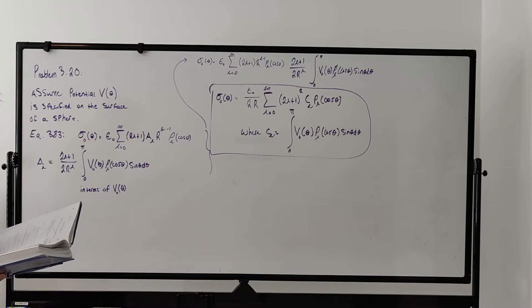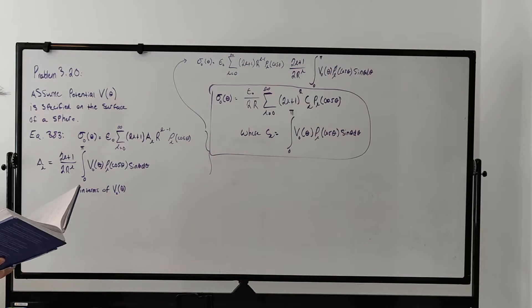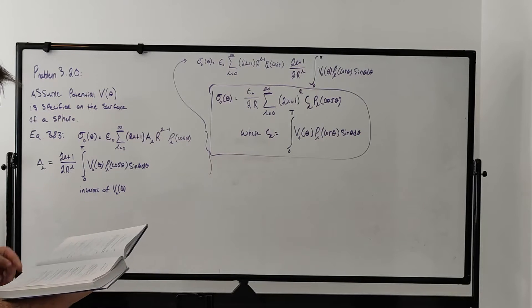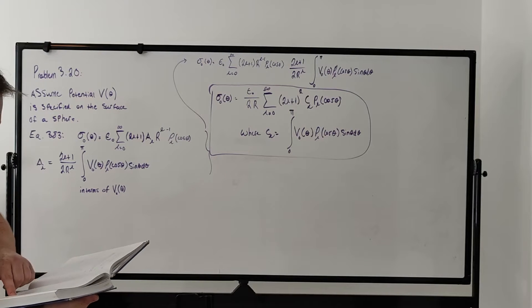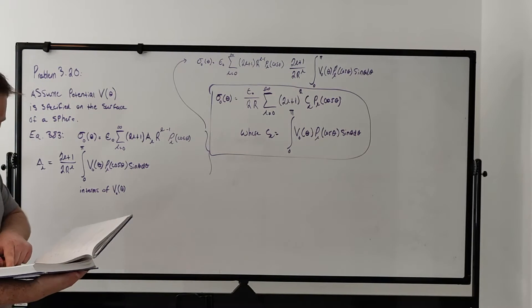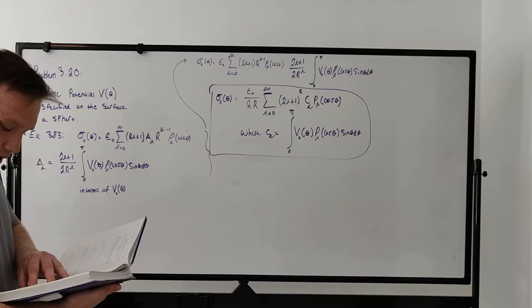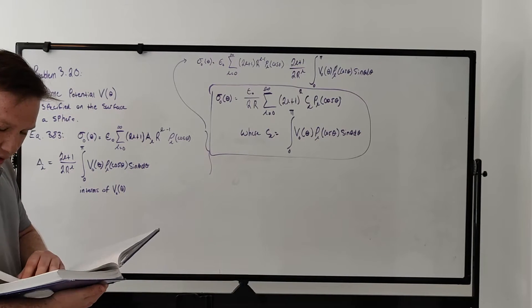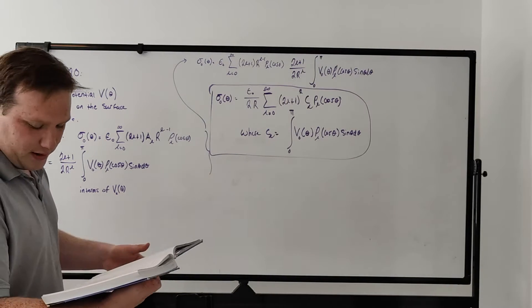The problem statement is: suppose the potential V₀(θ) at the surface of a sphere is specified and there is no charge inside or outside the sphere. Show that the charge density on the sphere is given by the equation in the book, which is my final answer: ε₀/(2R) times the summation from L=0 to infinity of (2L+1)² times C_L times the Lth Legendre polynomial P_L(cos θ), where C_L is given by an integral.